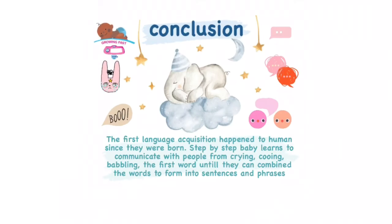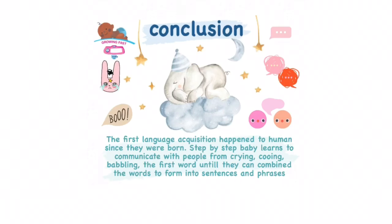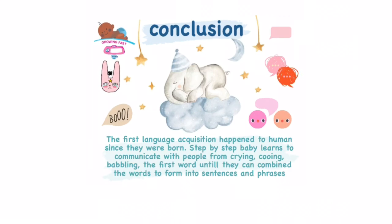In conclusion, first language acquisition happens to humans since they were born. Step by step, a baby learns to communicate with people — from crying, cooing, and babbling, to their first words, until they can combine words to form sentences and phrases. Thank you for watching this video. I hope this video gives you information about language acquisition and the stages of first language acquisition. Thank you!